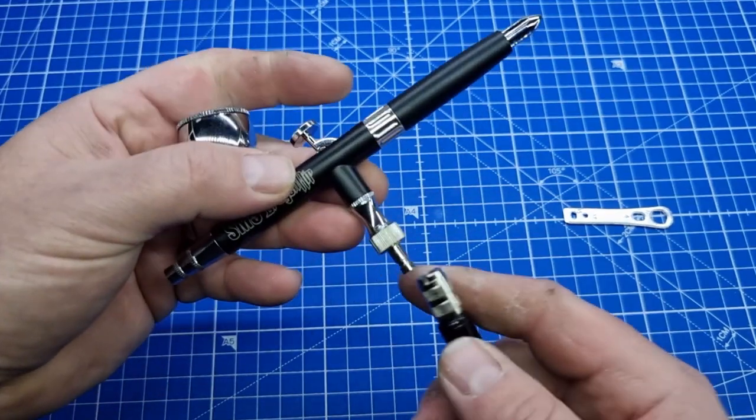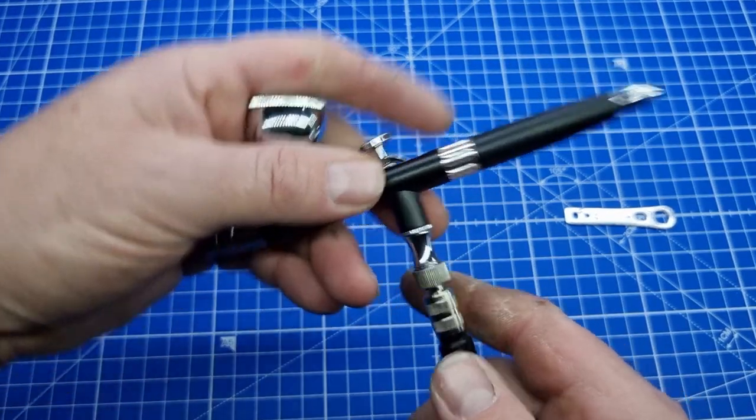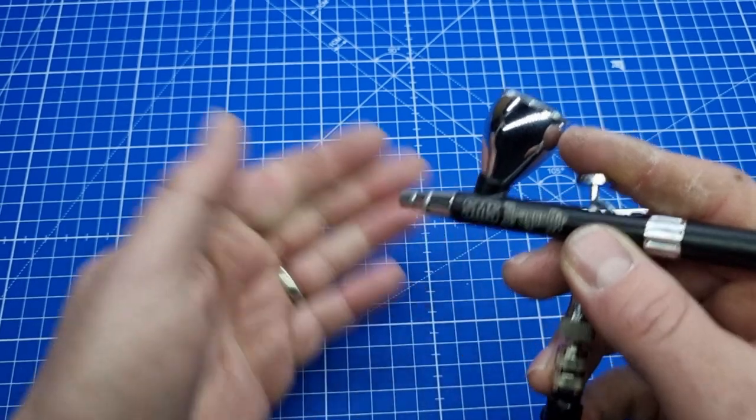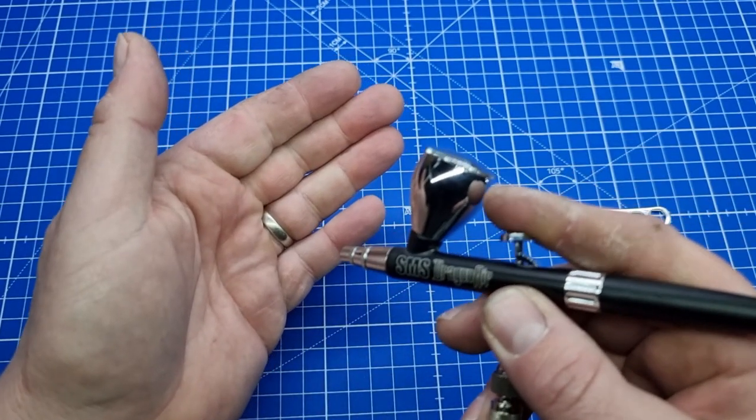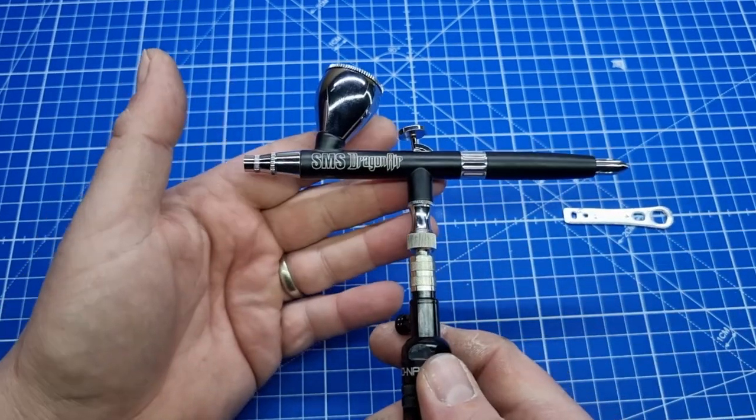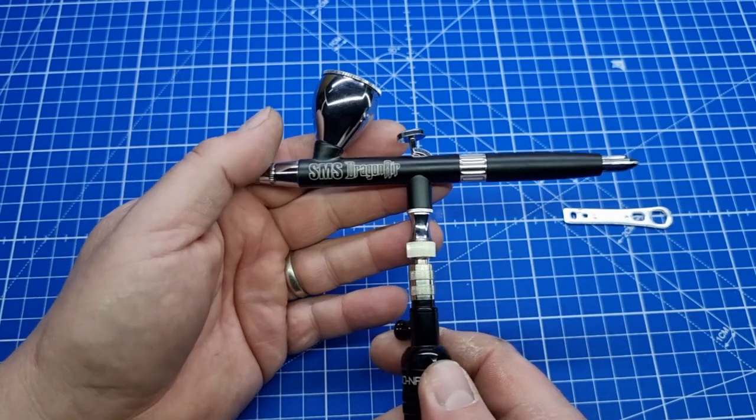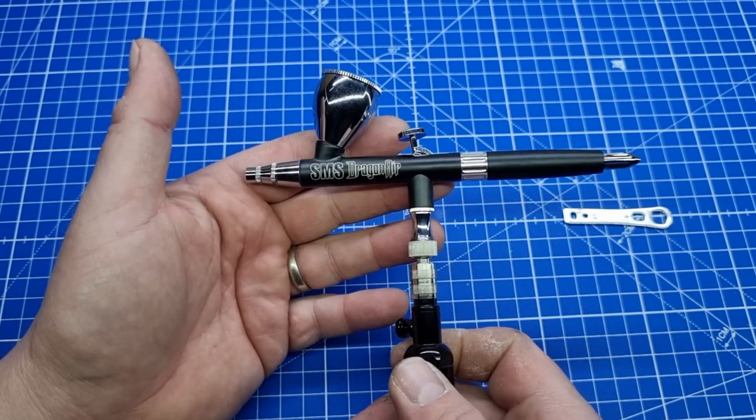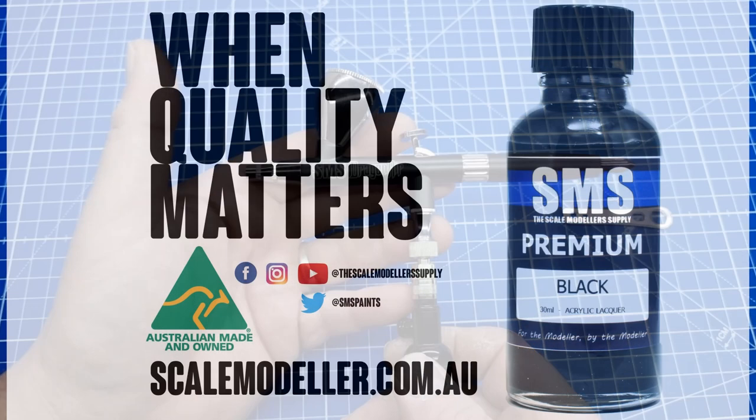So then one final check, we'll just plug it in to the air and make sure that the airflow is working, which it is. So there you go, that's how you completely strip down and reassemble your SMS Dragonair airbrush.